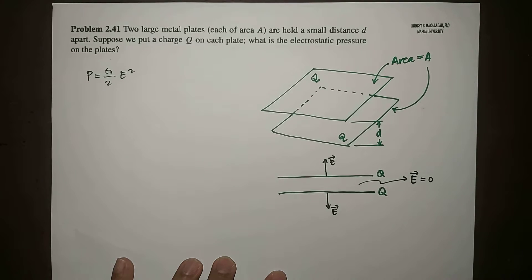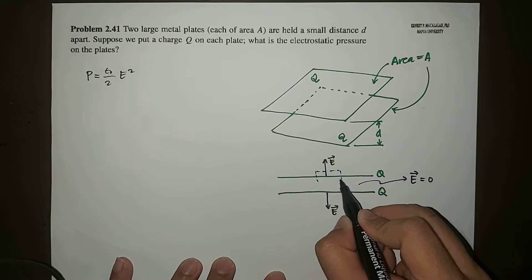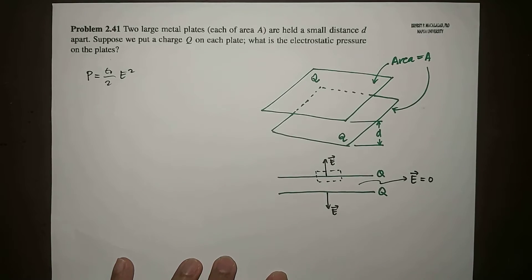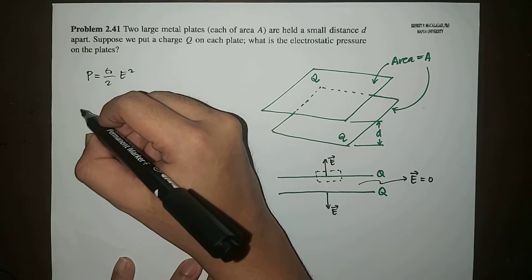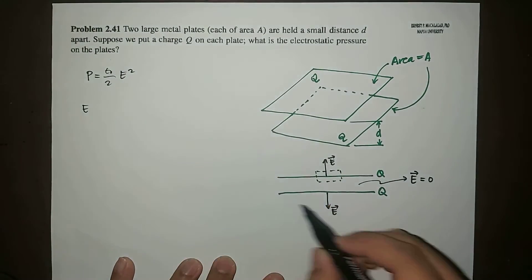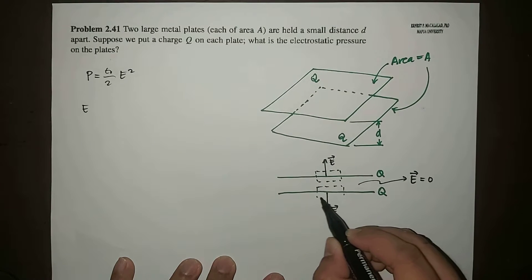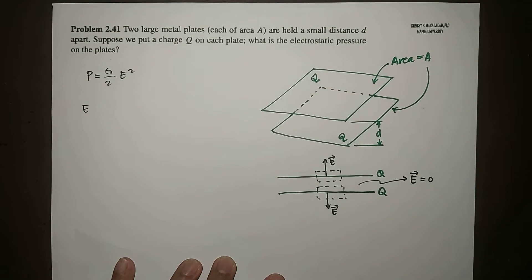This is the electric field by a plate. So we already know that for a plate like this, using a field box, the electric field would be the same magnitude for the two.